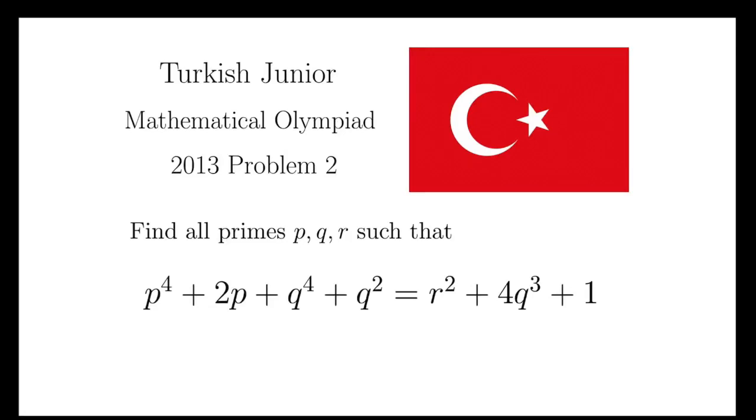We are going to go over the second problem of the Turkish Junior Mathematical Olympiad 2013. The problem says find all primes p, q, r such that p^4 + 2p + q^4 + q^2 = r^2 + 4q^3 + 1.